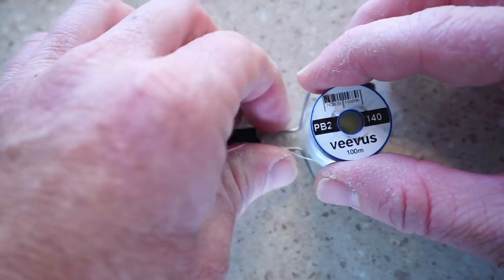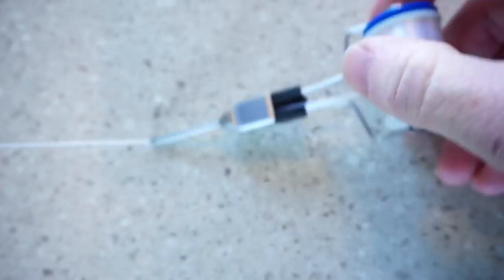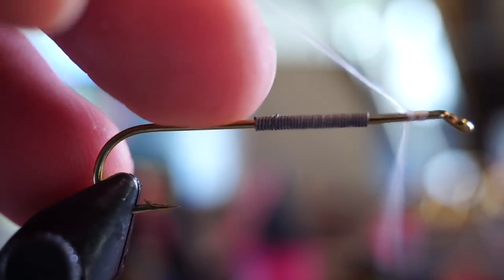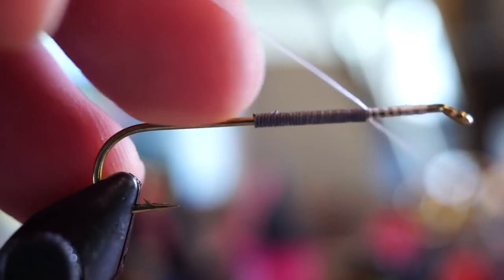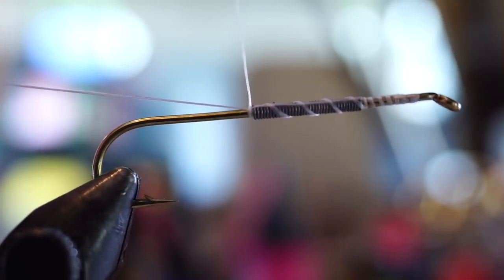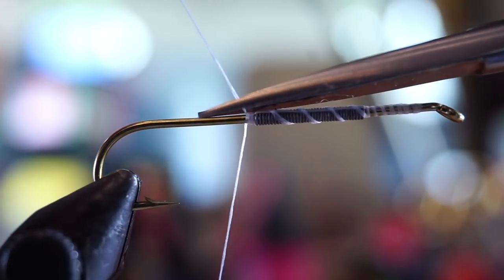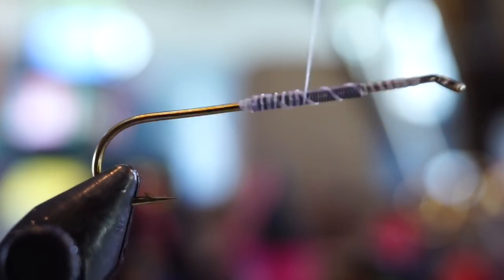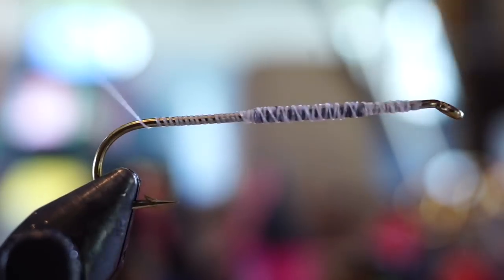For thread I like this Vivas Power Thread, 140 in white. Start your thread with a small gap behind the hook eye and bring your thread rearward. Keep the tag end on, as it will help you smoothly go over the lead wraps. Once you've built a thread dam on either side of the lead, then you can trim off the waste, and make a few tighter wraps back over the lead up and down to smooth out the lead bump. Then bring your thread back to about the bend of the hook.